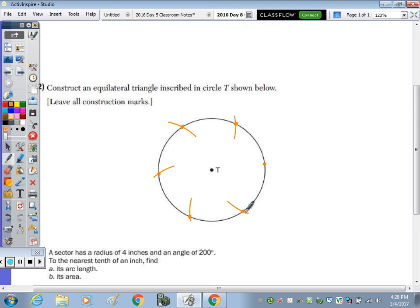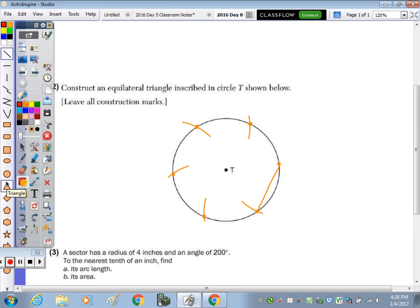So every chord that connects these six is going to be congruent, so congruent arcs have congruent chords. But I don't want to have six congruent chords, I only want to have three. So we connect every other one.